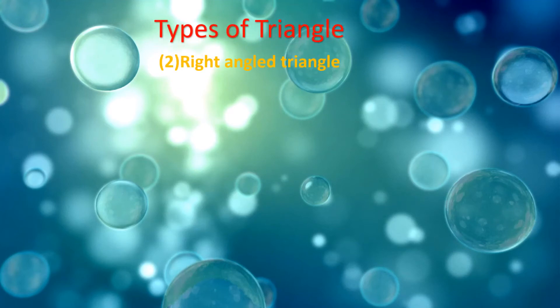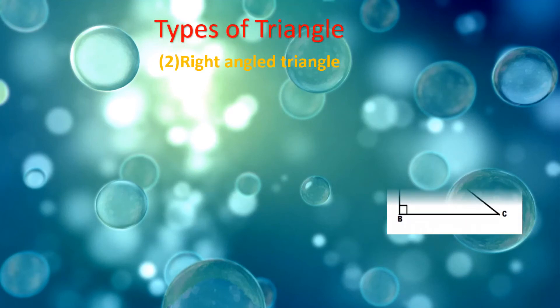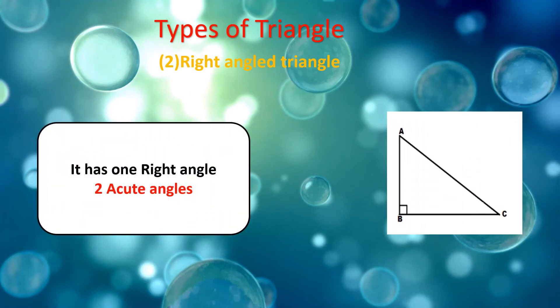Two: right-angled triangle. A right-angled triangle has one right angle equal to 90 degrees and two acute angles. A right-angled triangle must have one right angle equal to 90 degrees and two acute angles, each less than 90 degrees.